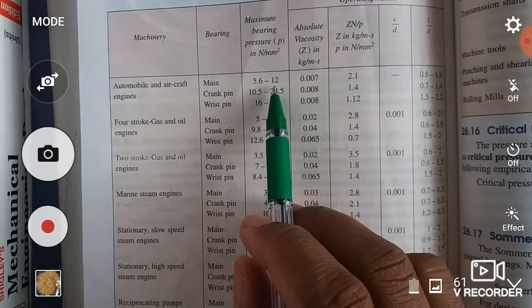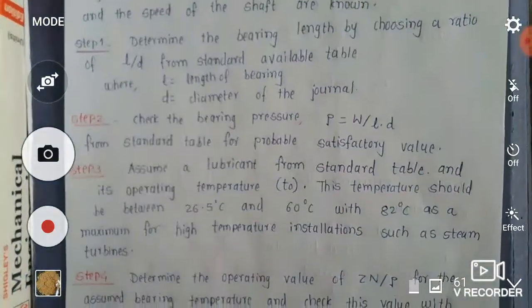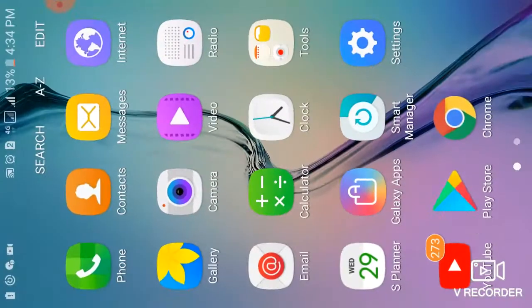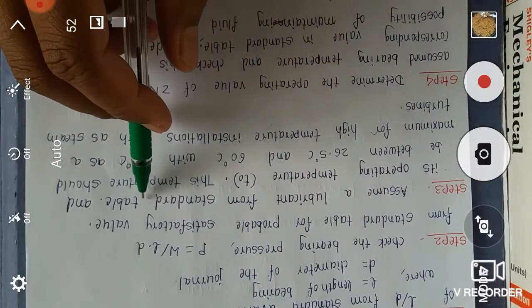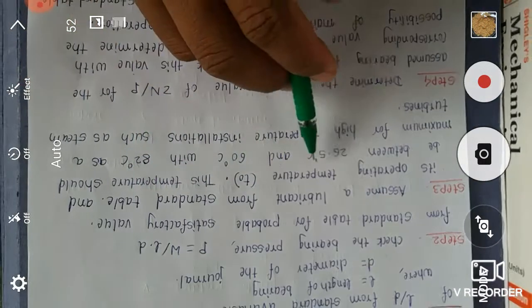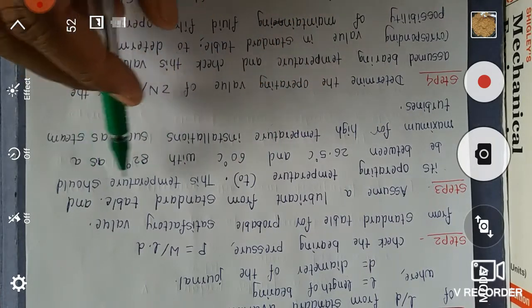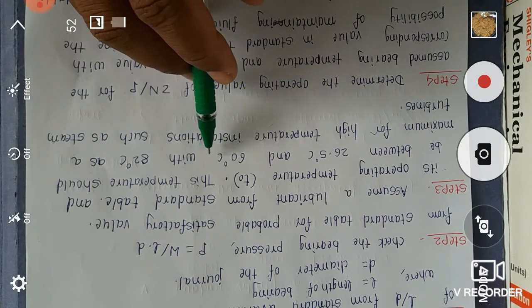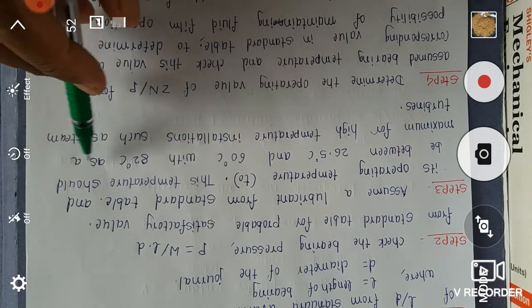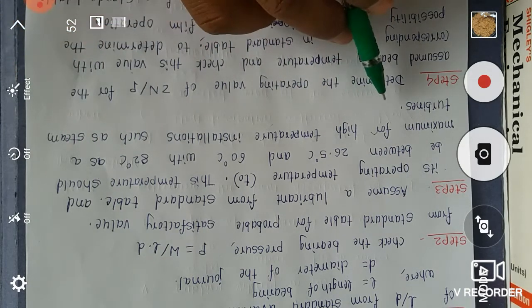Step 3: Select a lubricant from standard table and its operating temperature, that is TO. This temperature should be between 26.5 degree Celsius and 60 degree Celsius, with 82 degree Celsius as a maximum for high temperature installations such as steam turbines.